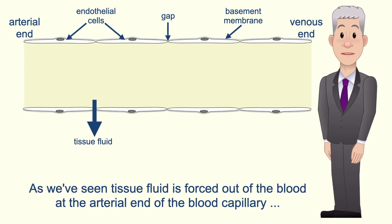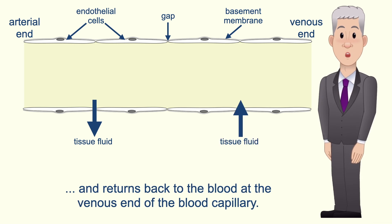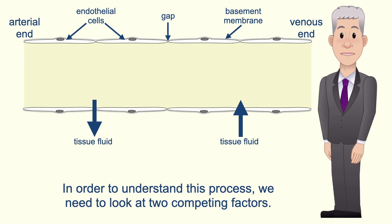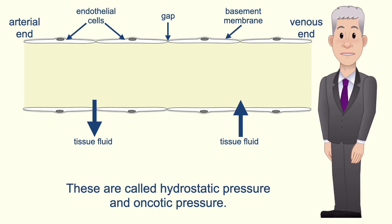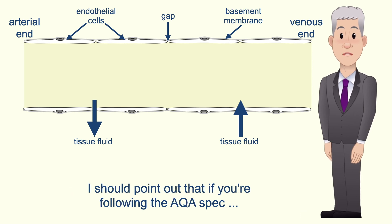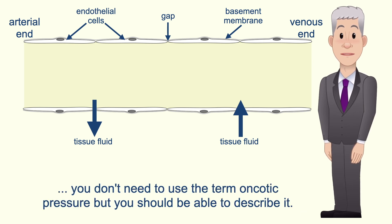Tissue fluid is forced out of the blood at the arterial end of the blood capillary and returns back to the blood at the venous end of the blood capillary. In order to understand this process we need to look at two competing factors: hydrostatic pressure and oncotic pressure. If you're following the AQA spec you don't need to use the term oncotic pressure, but you should be able to describe it.